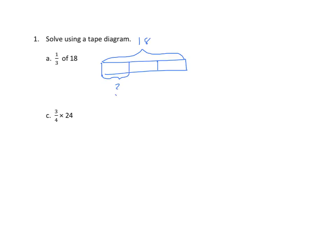So we have one-third of 18 represented here. So we have how many units? Three units. So we say three units equals 18. One unit equals 18 divided by three, and that equals six. So our answer is six. One-third of 18 equals six.